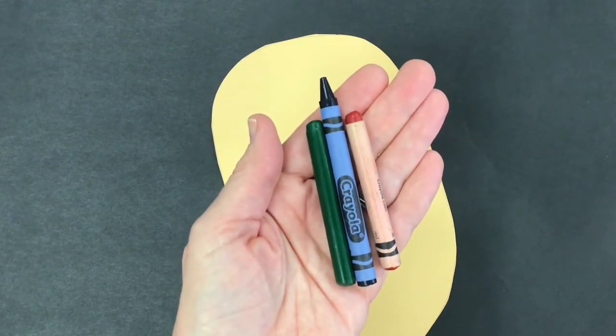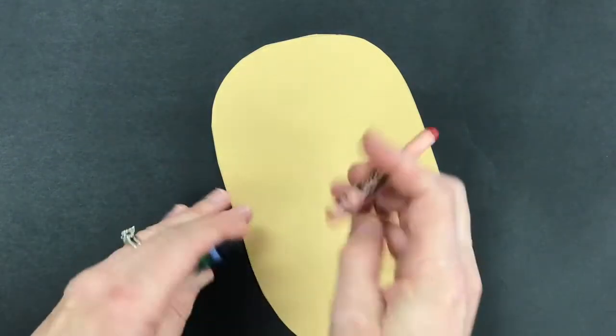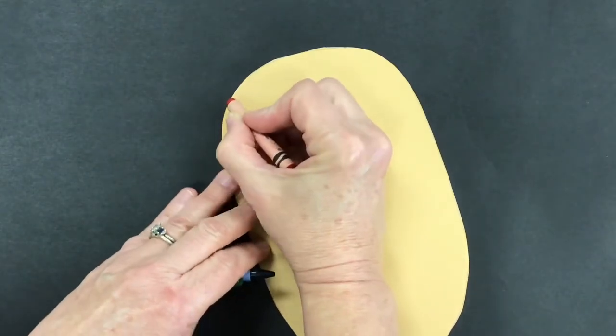Next you're gonna get out some crayons. I chose green, blue, and red, but you can choose whatever colors you want. We're gonna make a pattern.